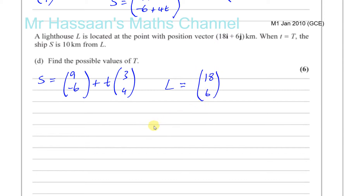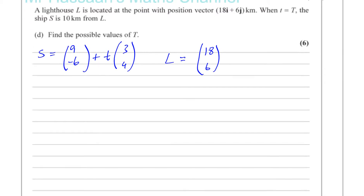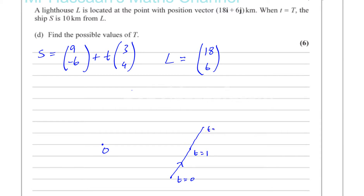To make it clear, let's make a little diagram. Let's say the origin is here. The position vector of the ship at time zero was (9, -6), somewhere down here. It's moving in the direction (3, 4) — that's 3 across and 4 up — so when time equals 1 it's moved (3, 4), and when time equals 2 and so on.